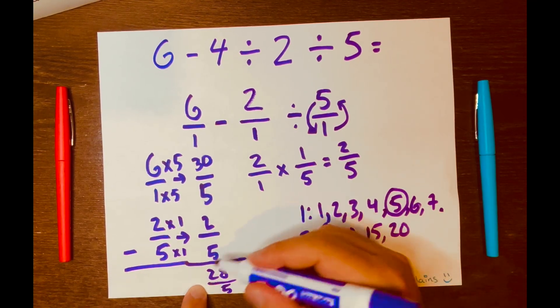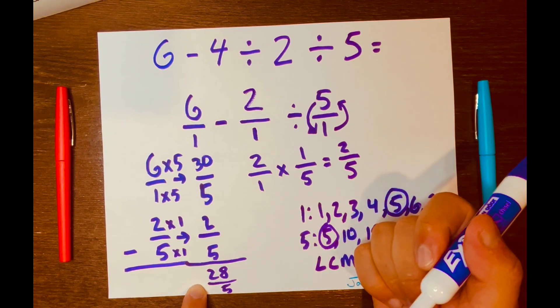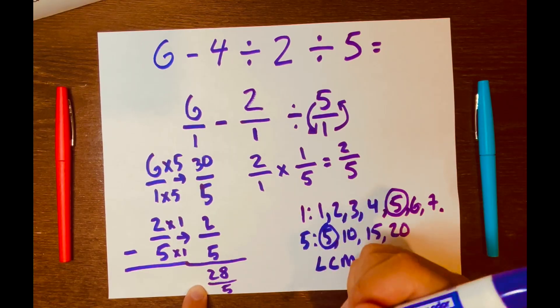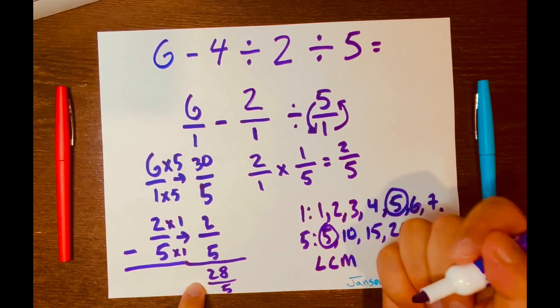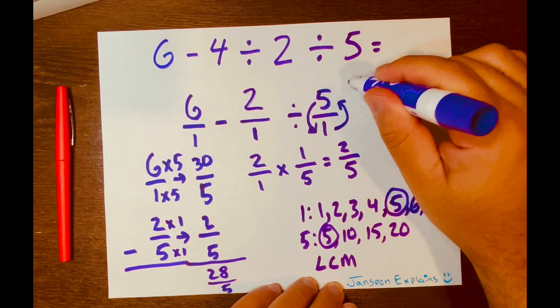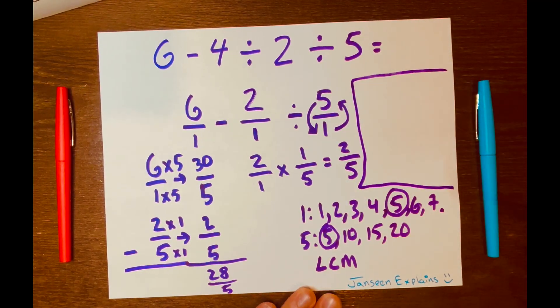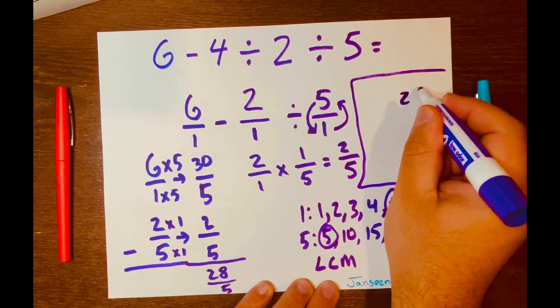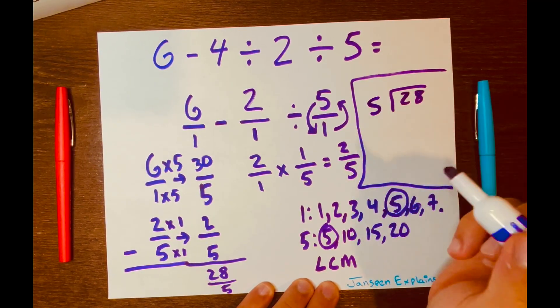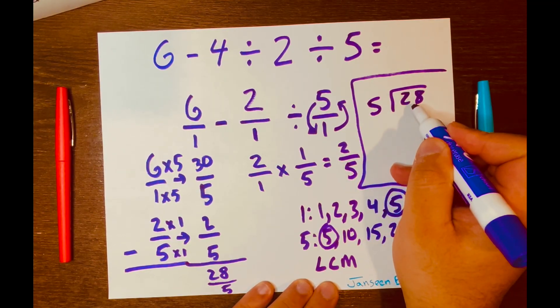And this is an improper fraction. So let's get a mixed number. And we can actually get a decimal answer as well. So I ran out of space here. So 28 will be the dividend and the 5 will be the divisor. So how many 5s can fit into 28?